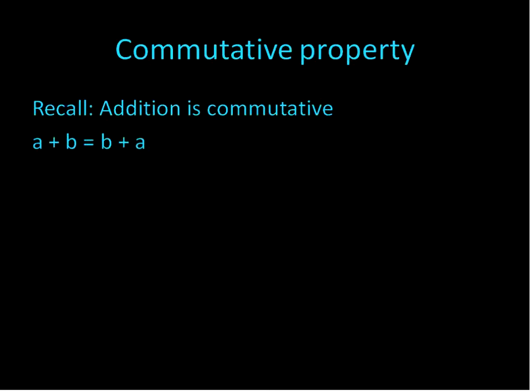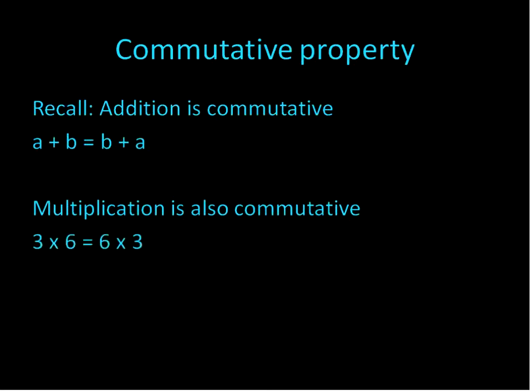First off, the commutative property. Remember that addition is commutative, like a plus b is the same as b plus a. The numbers commute or they move around. Multiplication is the same way. 3 times 6 is the same as 6 times 3. You probably already know that. But when we move numbers around, we can do that with addition or multiplication.